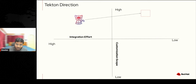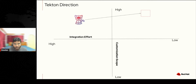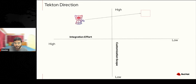Tekton Hub is a collection of reusable tasks. Looking at where Tekton sits today, it's in the second quadrant — high customization scope, but with higher integration effort to make it work with other tools. The direction of the Tekton community and Red Hat is to move it to the first quadrant: increasing customization scope while lowering integration effort.